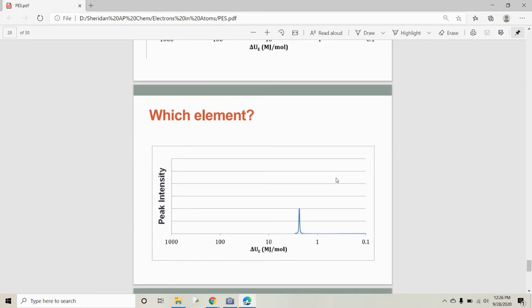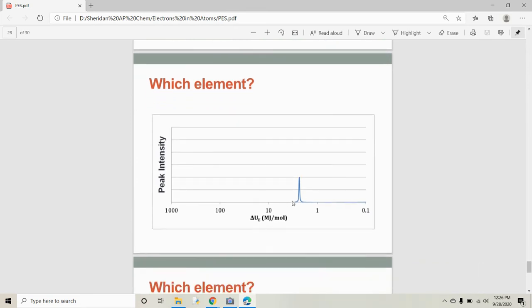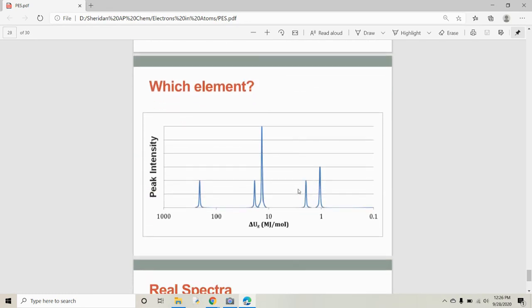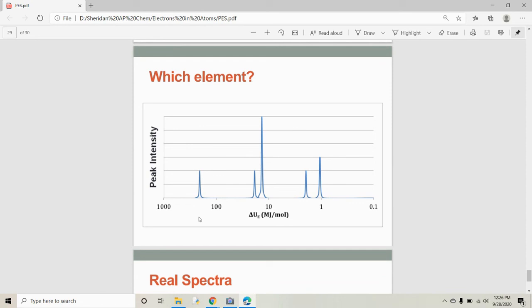Which element? Well, geez, it's only, what? One peak? Say about two. It's hard to tell here because it could be, there's no labels here, but we'll just say that each line is one. So, I'm going to say that that's 1s2. I'm going to say that's helium. All right, here we go. We got 1s2. 2s2. 2p6. 3s2. 3p3, which once again is phosphorus.